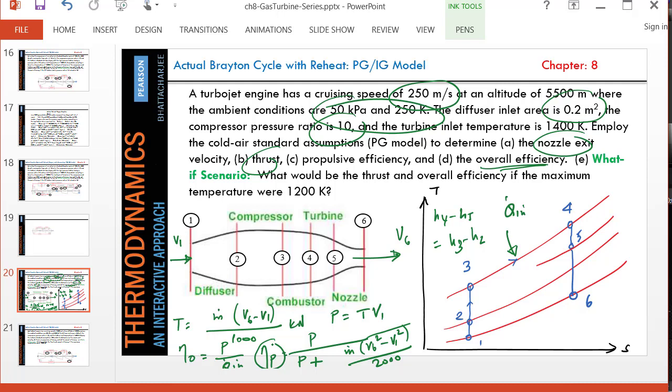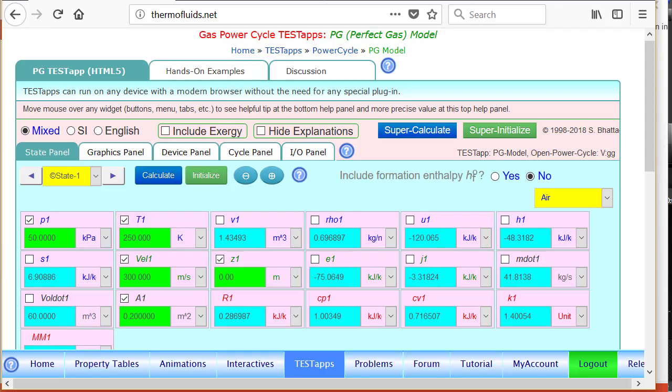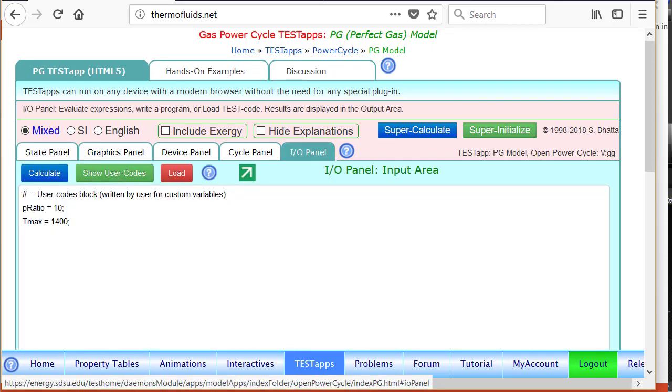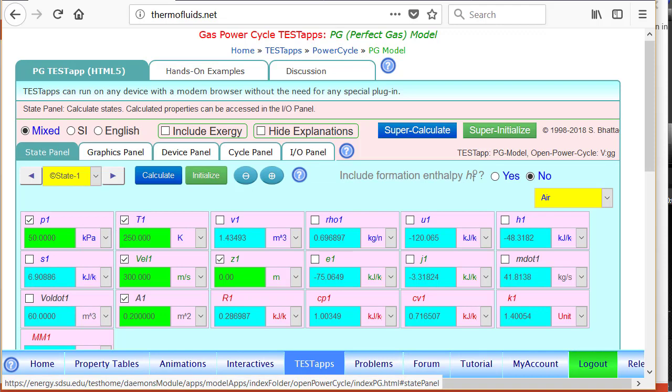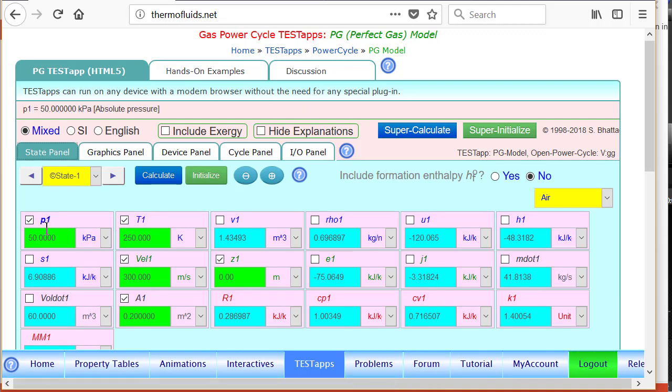Chapter eight in your textbook goes over all the theory that you need to know. So let's go ahead. I have already generated the solution using TEST codes. Let me just walk you through what I have done. In the I/O panel I have declared the overall variable p ratio and maximum temperature. This is the compression ratio, the pressure ratio of the compressor.